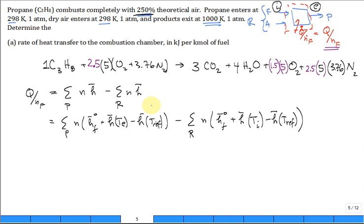Now remind me, what is this temperature? 298. This temperature? 298. If the propane enters at 298 and the dry air enters at 298, everything, all the reactants are coming in at 298. That difference is zero.